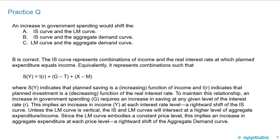B is correct. The IS curve represents combinations of income and the real interest rate at which planned expenditure equals income. It represents combinations such that savings equals investment plus G minus T plus X minus M, where S(Y) indicates that planned savings is an increasing function of income and I(R) indicates that planned investment is a decreasing function of the real interest rate. An increase in government spending requires an increase in saving at any given level of the interest rate, implying an increase in income at each interest rate level — a rightward shift of the IS curve. Unless the LM curve is vertical, the IS and LM curves will intersect at higher levels of aggregate expenditure and income. Since the LM curve embodies a constant price level, this implies a rightward shift of the aggregate demand curve.